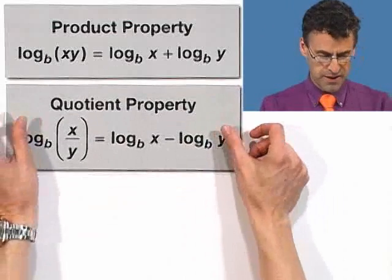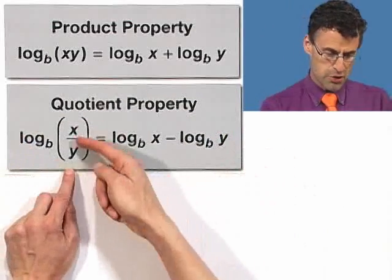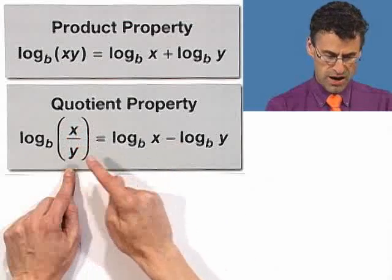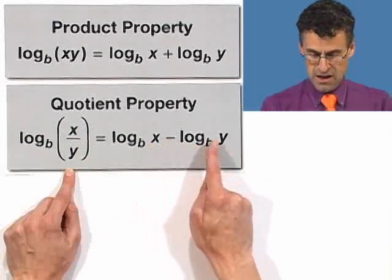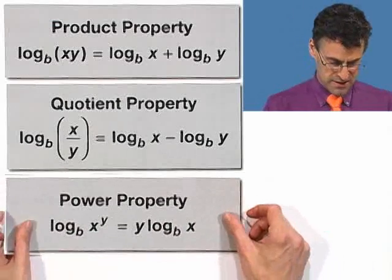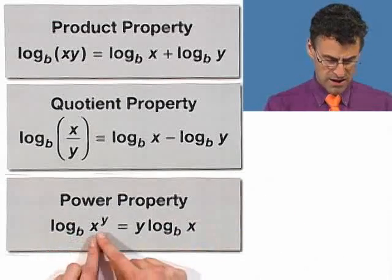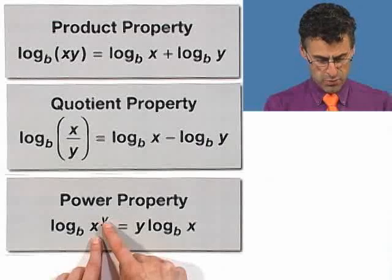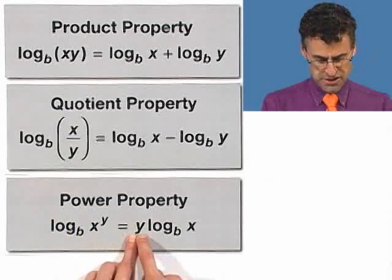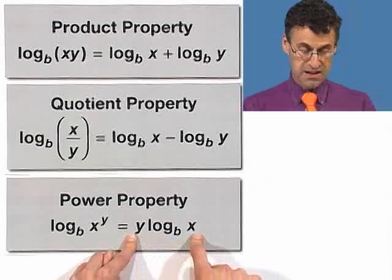The quotient property is a similar thing, says that the log of a quotient is the difference of the logs. So log of x over y is log of x minus log of y. And the power property tells us that if I have log of x to a power y, that y can come out way in front as a coefficient, and I can say that equals y log x.